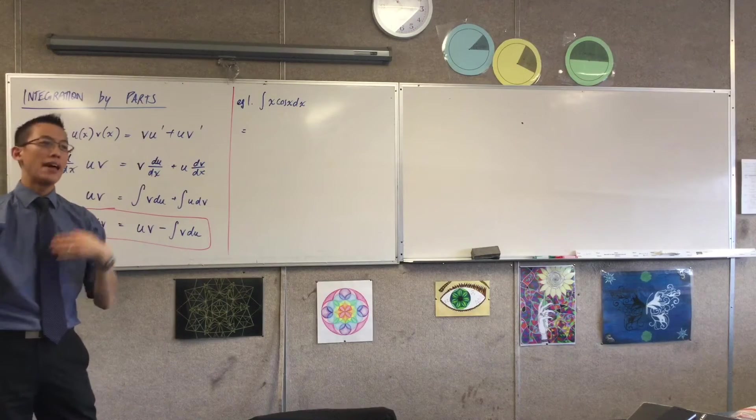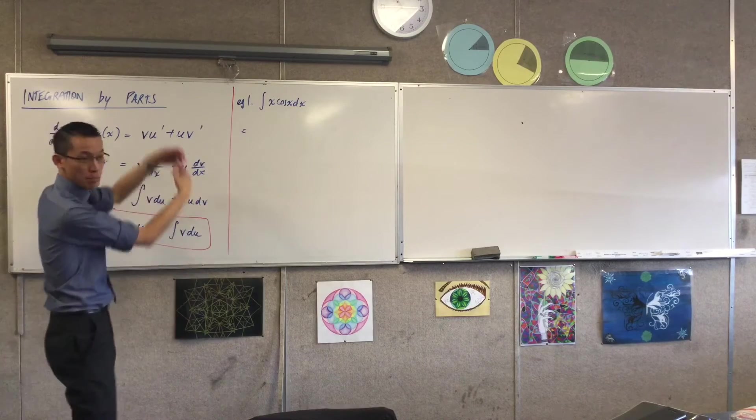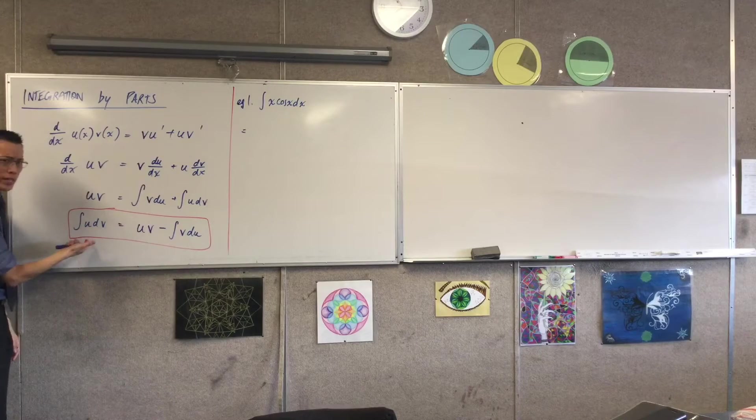Now there's a good choice and there's a poor choice and that's part of why this is not just a rule. You can't just blindly do this. You actually have to think, which one's which?